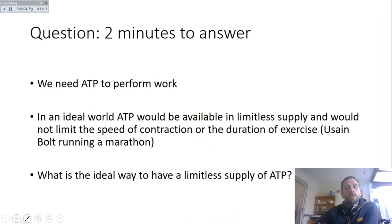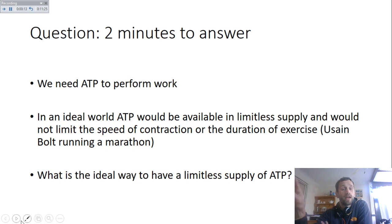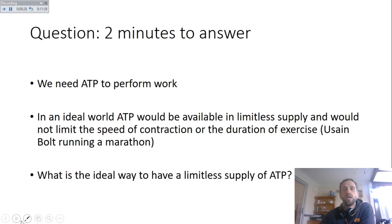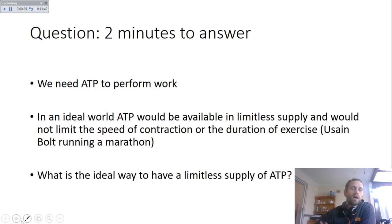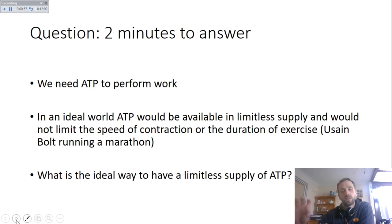If we're happy that we need ATP to perform work — and without it we can't do the work we need to do — in an ideal world we'd have ATP readily available for as much muscle contraction as we'd want. You can imagine: if we had all the ATP ready near the muscles, we could run as fast as we'd like for as long as we'd like. So the thought experiment is: if you wanted a limitless supply of ATP at the muscle, how would you achieve that? Pause the video for two minutes.